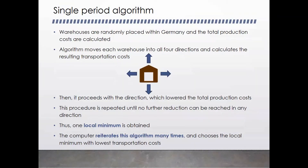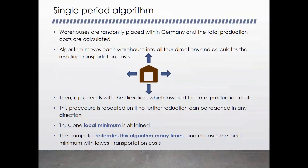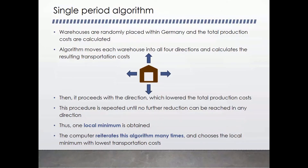Let me start by explaining the single period algorithm. The warehouses are placed randomly within Germany and the total production cost is calculated. Afterwards the algorithm will move each warehouse in all four directions and calculate the resulting transportation cost. It will proceed in the direction where the transportation cost is lowest, moving the warehouses across the map, until there is no further reduction possible — giving us a local minimum.